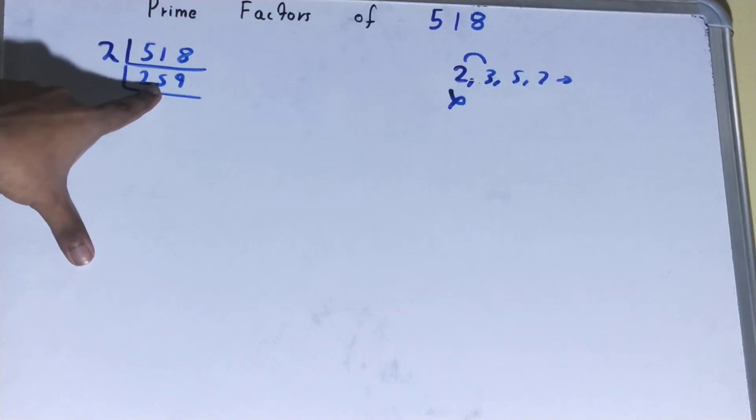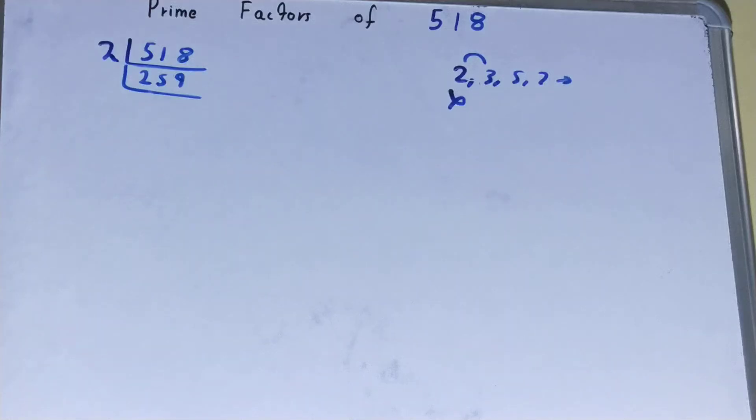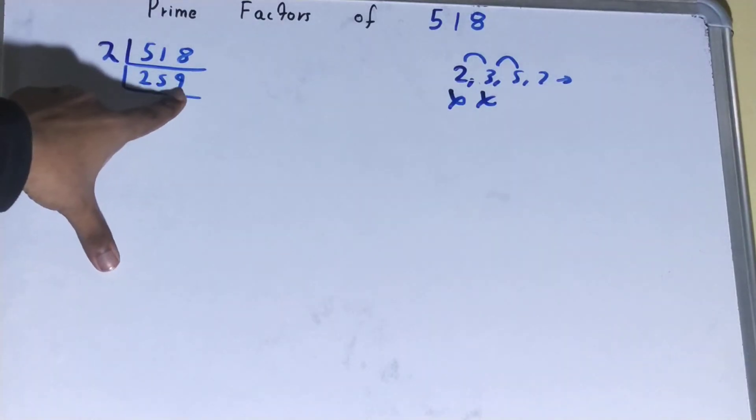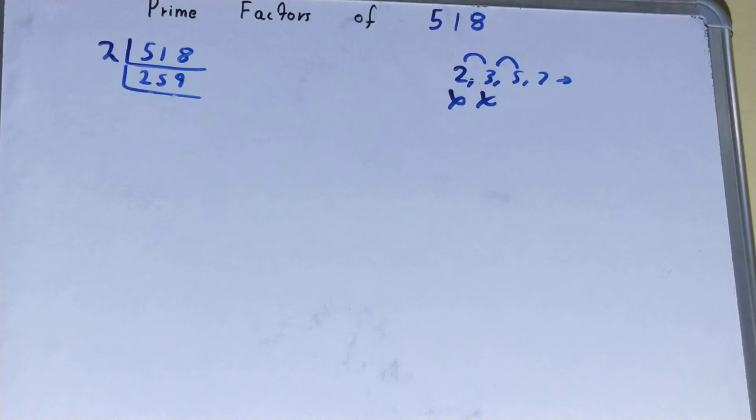So we'll go to the next lowest prime number, that is 5. The last digit is neither 5 nor 0, so it is not divisible by 5 also. We'll go to the next lowest prime number, that is 7.